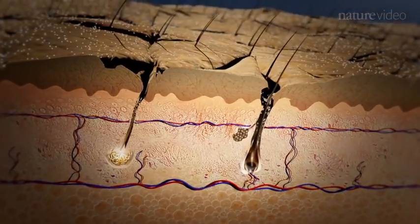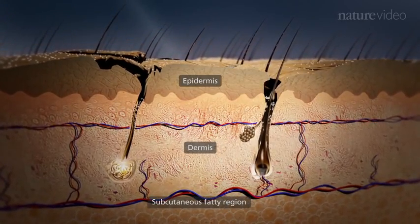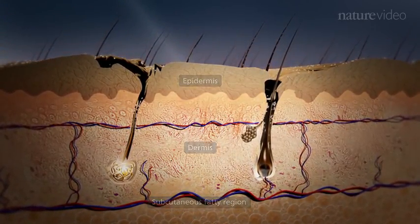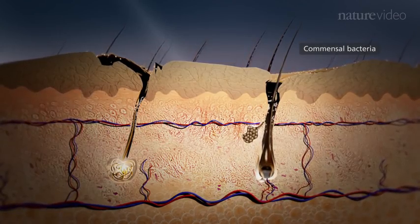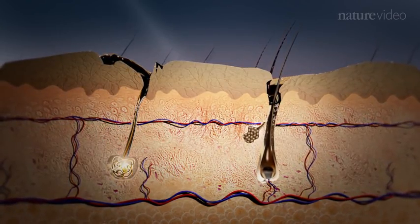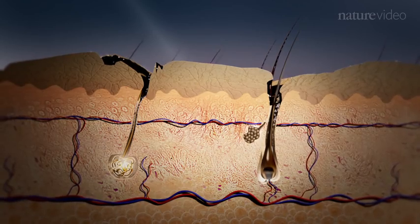The skin is composed of epidermis, dermis, and a subcutaneous fatty region. Commensal bacteria, fungi, and viruses living on the skin have beneficial effects in the protection against pathogens and in wound healing.